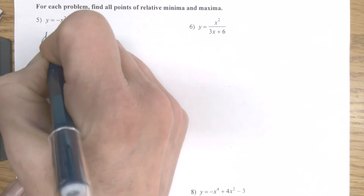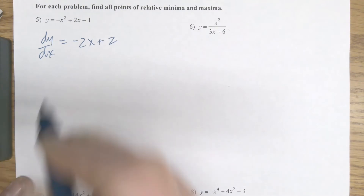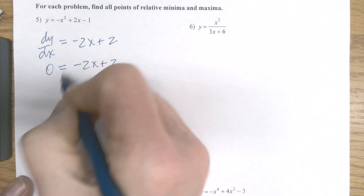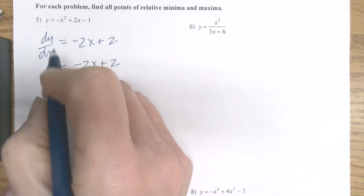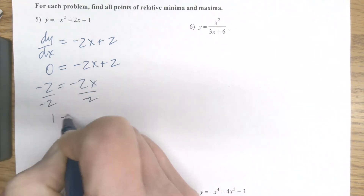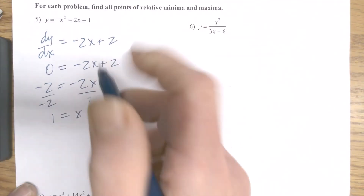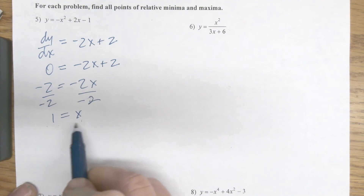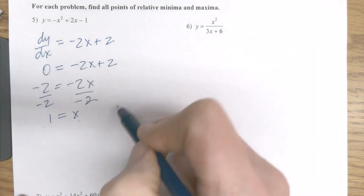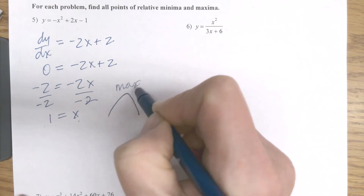I have to find all points of min's or max's, and I do that by taking the derivative dy/dx equals negative 2x plus 2 and setting that equal to 0. So I solve for x: subtract 2, getting negative 2 equals negative 2x, divide by negative 2, giving x equals 1. So I have a change of direction at x equals 1; I just need to figure out if it's a max or a min. If it's a max, I am increasing and then decreasing. If it's a min, I'm decreasing and then increasing.